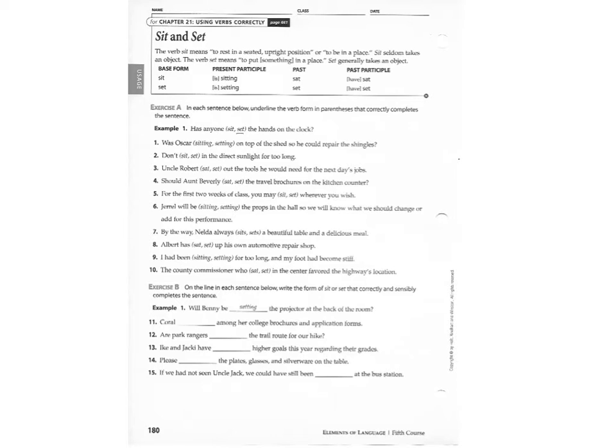The forms of sit and set are pretty straightforward. You have sit, sitting, sat, and have sat. Sit will never take a direct object. And then you have set, which is set, setting, set, and have set. So we always want to remember set has a direct object, and sit is not going to have a direct object.